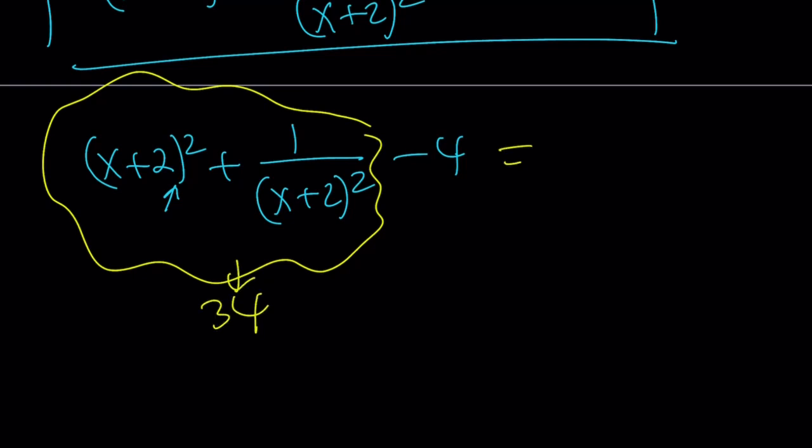This is equal to 34. Therefore, 34 minus... Okay. Slow down. 34 minus 4 is equal to 30. And that is the right answer.